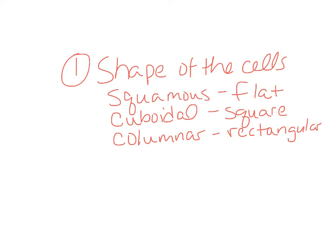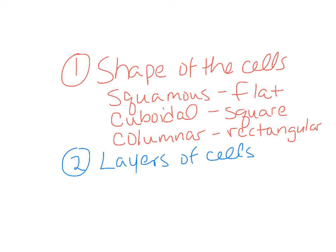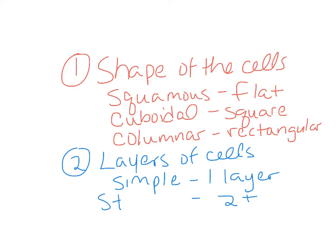The second way we classify epithelial tissue is by how many layers of cells there are. If there's just one layer, we call it simple epithelium. If there are two or more layers, we call it stratified.